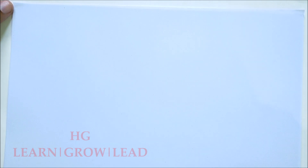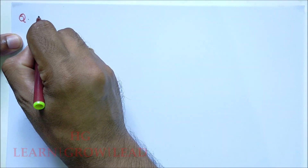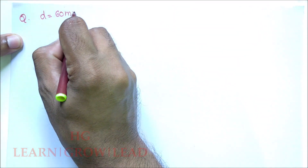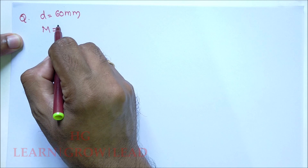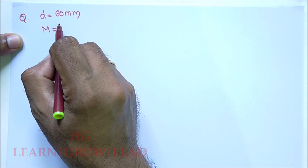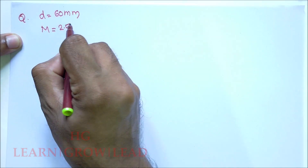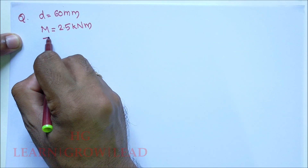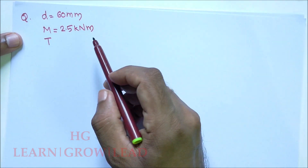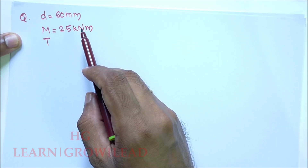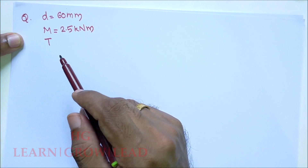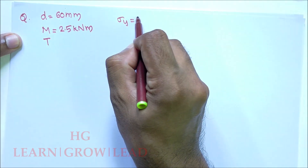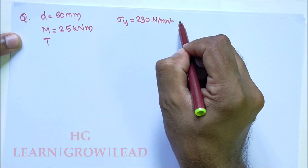This is the most important sample problem. A shaft of 60 mm diameter is subjected to a bending moment of 2.5 kNm and a torque T. The yield strength of the material is taken as 230 N/mm² with a factor of safety of 1.5.